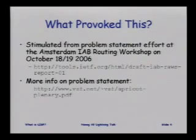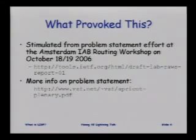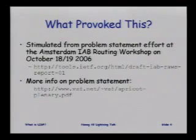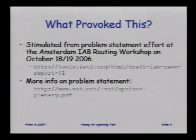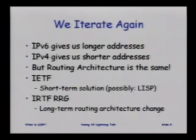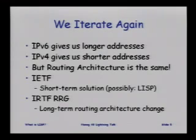What provoked this? This was the problem statement from the Amsterdam IETF routing workshop in October of last year. This is a problem that's been around for a long time. The IAB got together and said we actually want to solve it, and so a bunch of us got together and said we're going to really solve it this time. I personally have understood the problem for about 10 years now, and I'm really excited to start working on a solution.